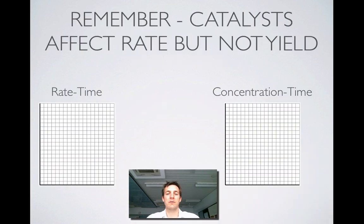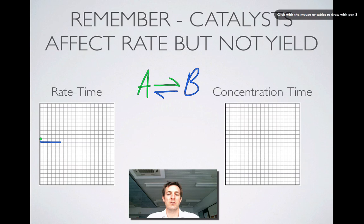Let's have a look at some rate-time graphs and concentration-time graphs. Let's imagine a particularly imaginative equilibrium system where A is turning into B in the forward direction and B turns back into A in the reverse direction. Let's draw the rates of our two reactions which are representing a system at equilibrium. So the rates are the same.